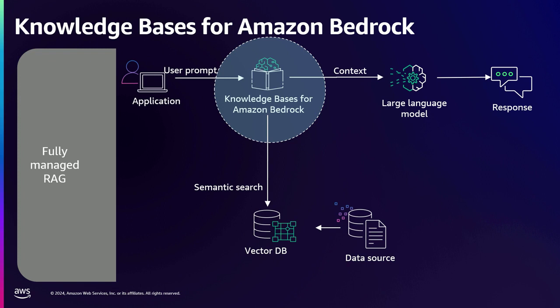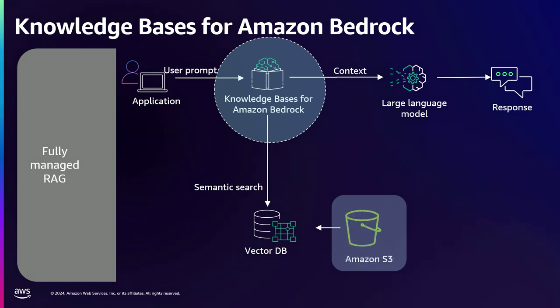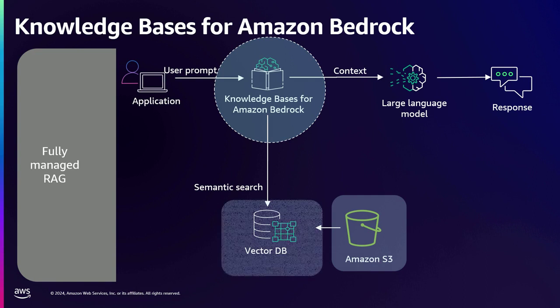Behind the scenes, it's still using the vector database and performing searches on it. In the AWS context, the data source could be all your data stored in an S3 bucket, and the vector database could be Amazon OpenSearch Service. There are other choices available with Knowledge Bases, like Redis, Pinecone, Amazon Aurora PG Vector, and more. For this talk, we have chosen Amazon OpenSearch Service.